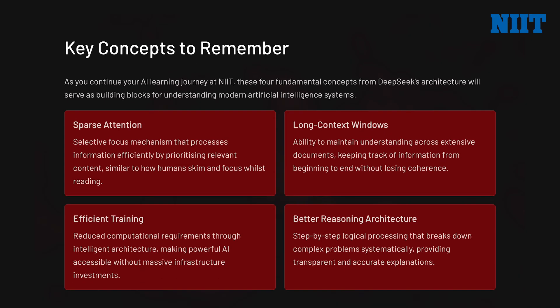Let me simplify the key theoretical ideas behind this update. Sparse attention is a selective focus mechanism that processes information efficiently by prioritizing relevant content, similar to how humans skim while reading. Long context windows allow the model to maintain understanding across extensive documents from beginning to end. Efficient training reduces computational requirements through intelligent architectures, making powerful AI accessible without massive infrastructure. Finally, better reasoning architecture provides step-by-step logical processing that breaks down complex problems systematically.